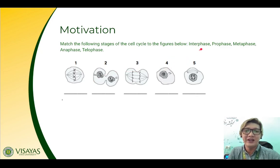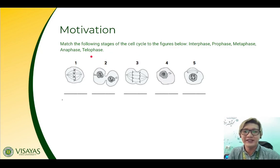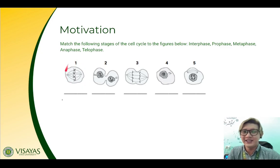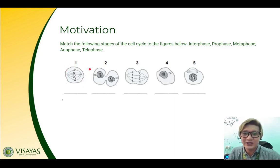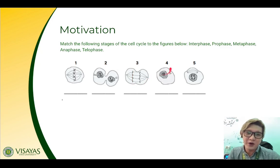The options are interphase, prophase, metaphase, anaphase, or telophase. So for number one, what phase of mitosis is this? Is it interphase, prophase, metaphase, anaphase, or telophase? How about number two? How about number three? How about number four? And how about number five?